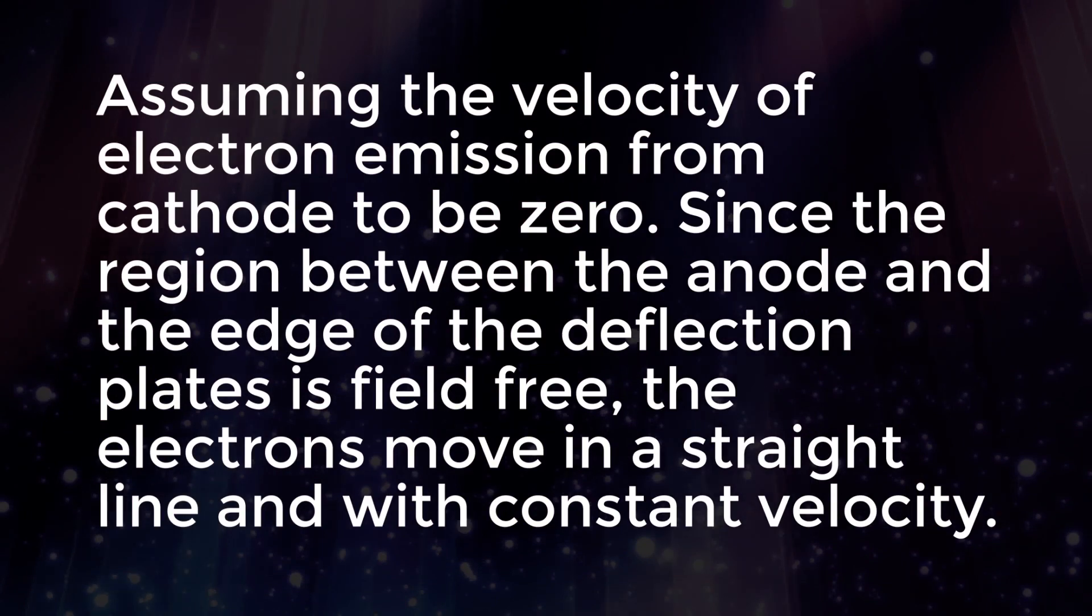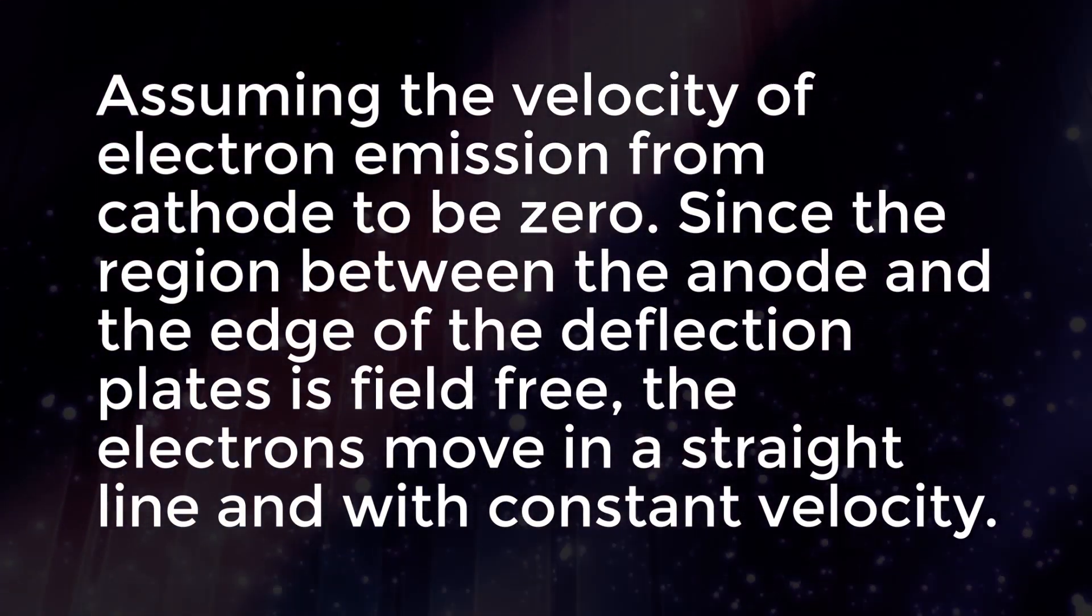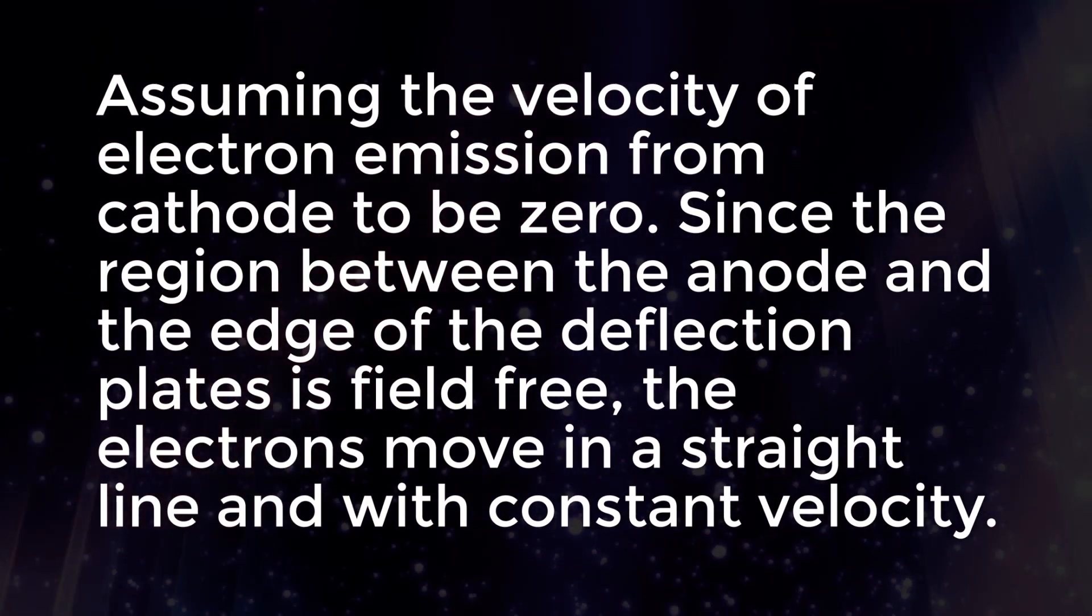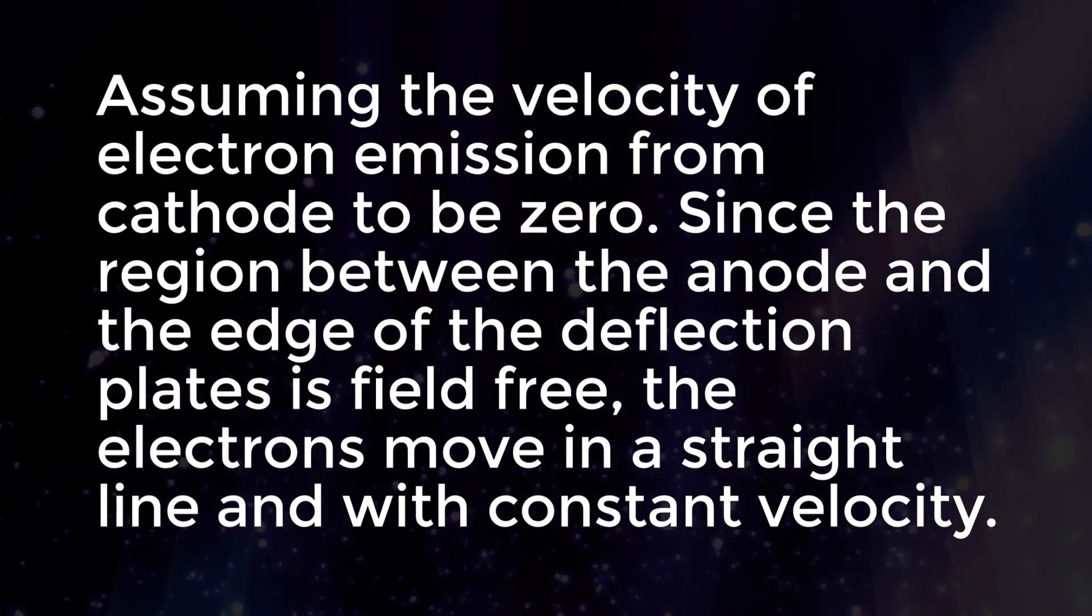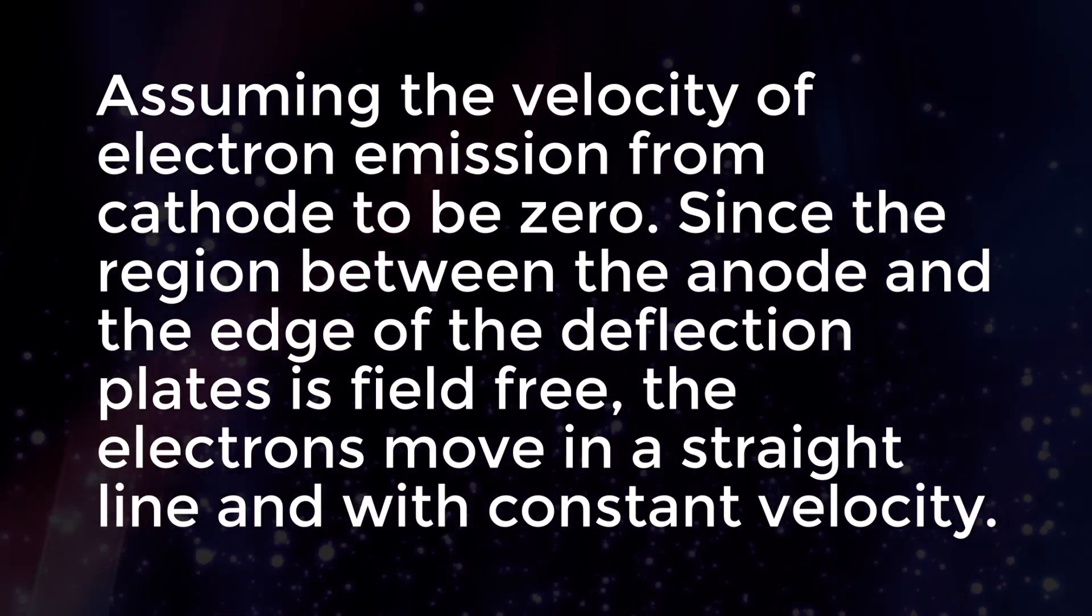Assuming the velocity of electron emission from the cathode to be zero, since the region between the anode and the edge of the deflection plates is field-free, the electrons move in a straight line and with constant velocity.